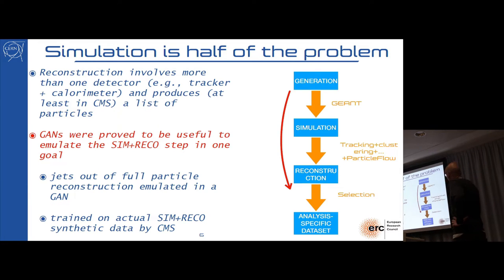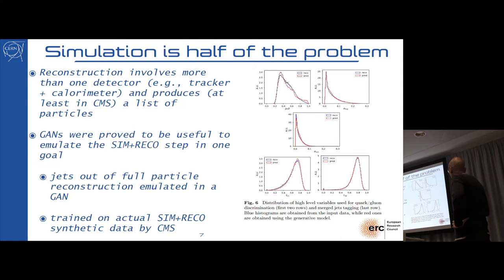With GANs you can do more actually. You can actually jump directly here, because you can imagine that your reference data set is not the outcome of the simulation, but it's actually the outcome of the reconstruction. And this way you can skip the full step. And this is actually tested. There is a paper.